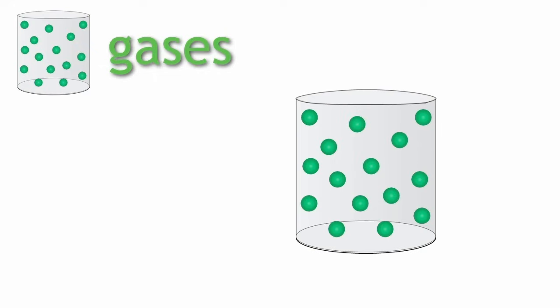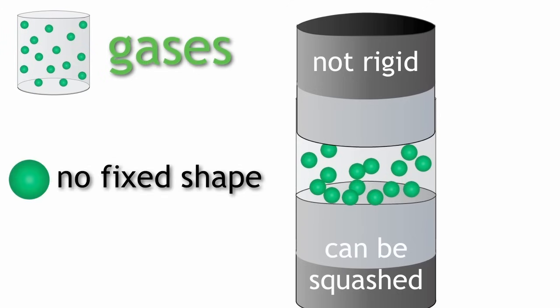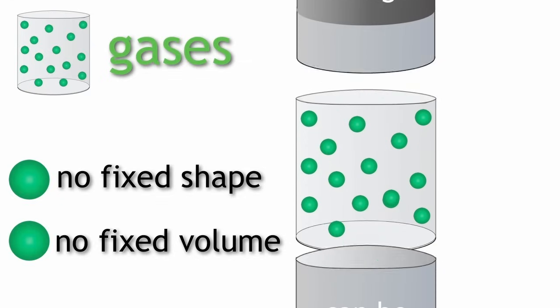As a result, gases are not rigid and can be squashed or compressed. They do not have a fixed shape nor fixed volume. They fill the whole space they are in.